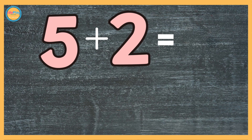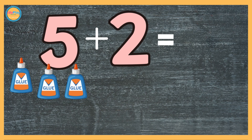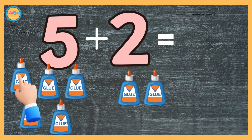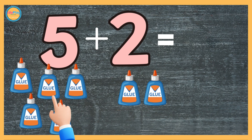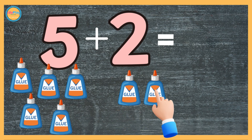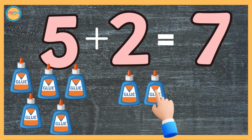5 plus 2. 1, 2, 3, 4, 5. Let's count 2. 1, 2. Now count together. 1, 2, 3, 4, 5, 6, 7. 5 plus 2 makes 7.